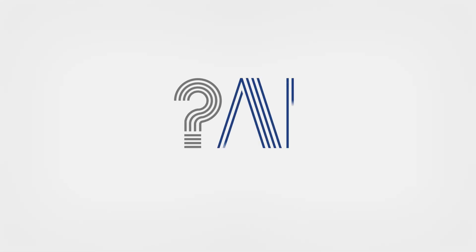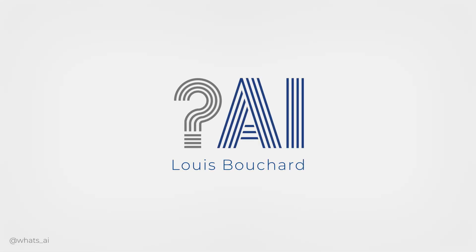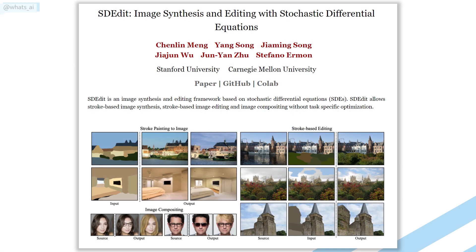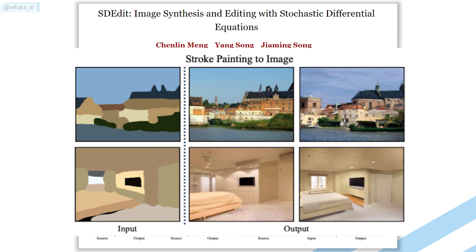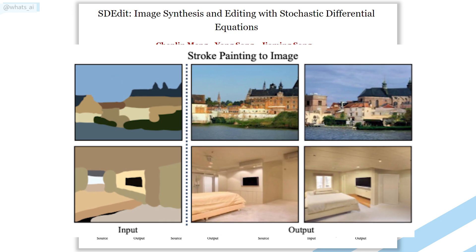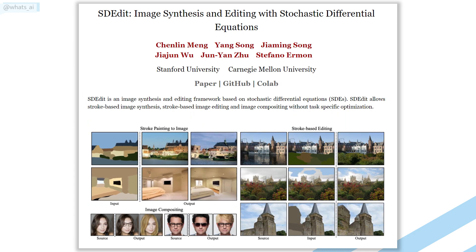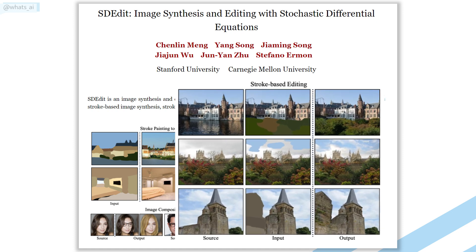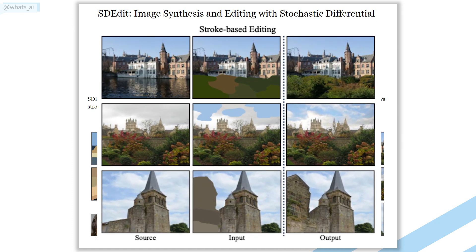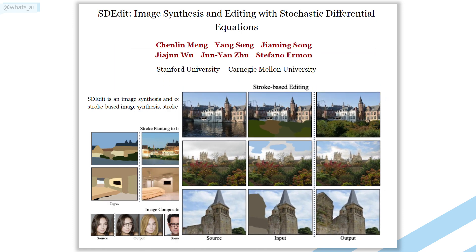Say goodbye to complex GAN and transformer architectures for image generation. This new method by Chen Lingmeng Eyal from Stanford University and Carnegie Mellon University can generate new images from any user-based inputs. Even people with zero artistic skills can now generate beautiful images or modifications out of quick sketches.